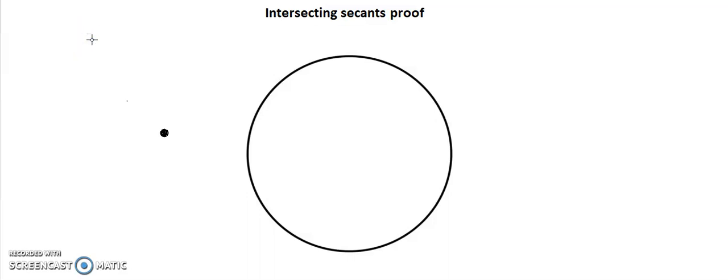Intersecting secants proof. When we are thinking about a secant, we know it is a line that crosses and touches the circumference at two points.